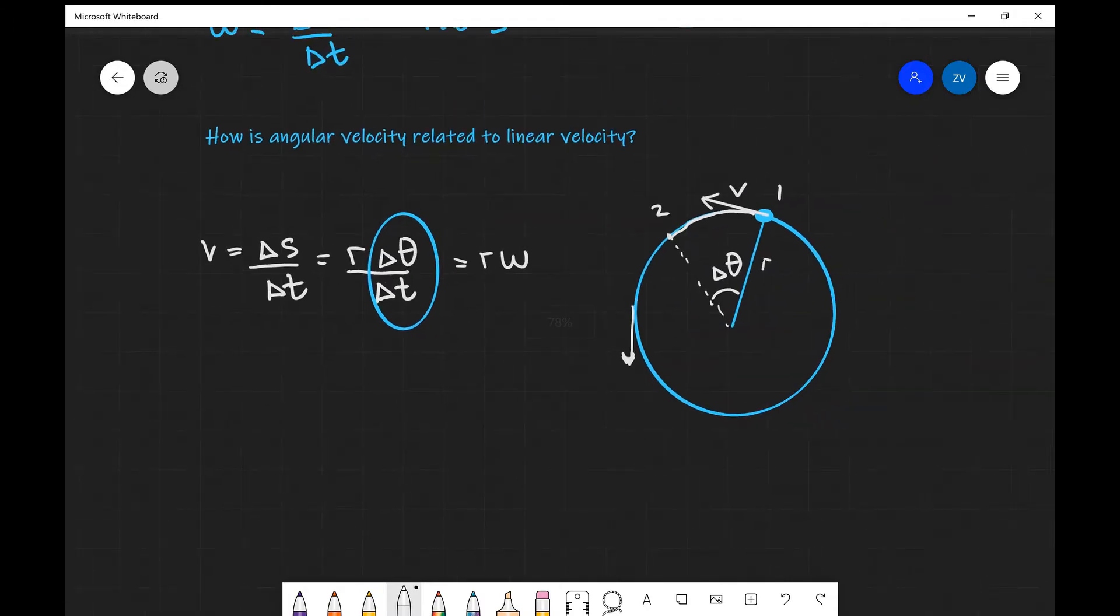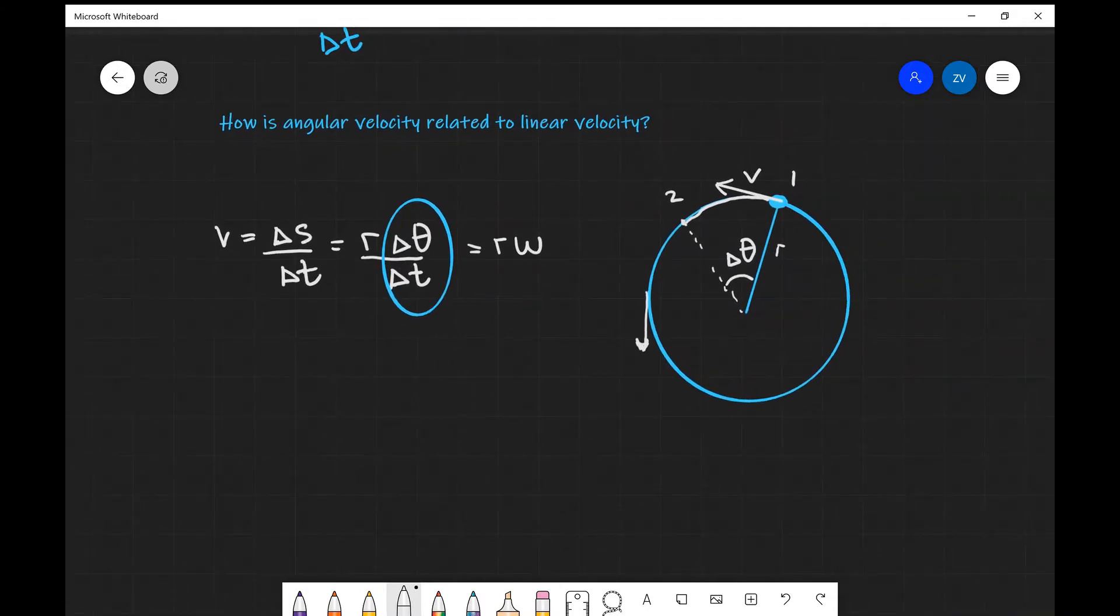So the linear speed v is actually equal to r omega. This is one of the most fundamental formulas in understanding circular motion.